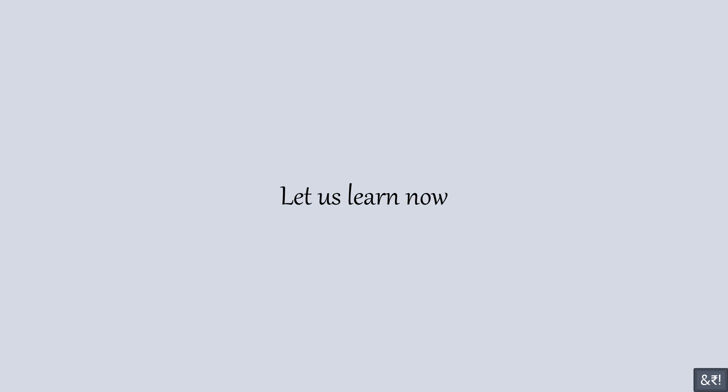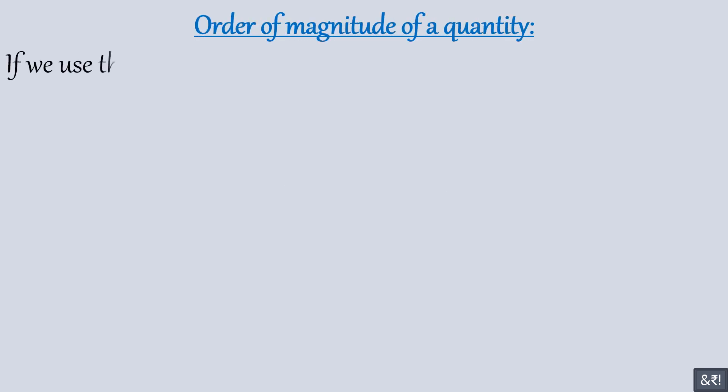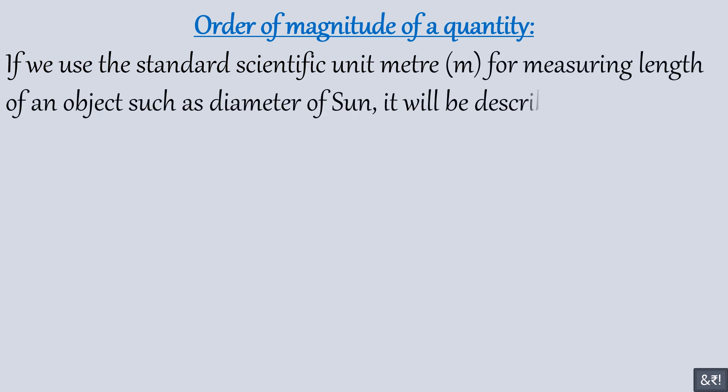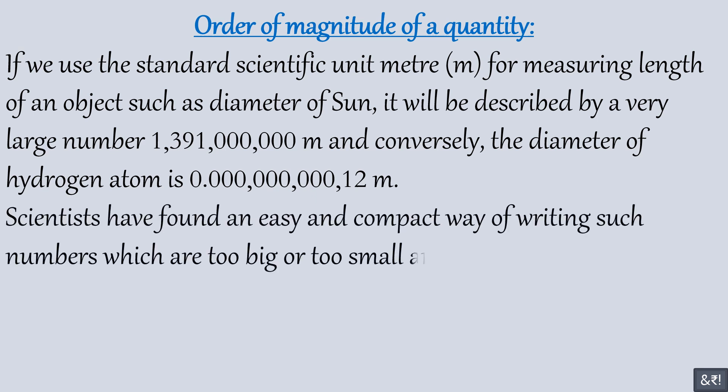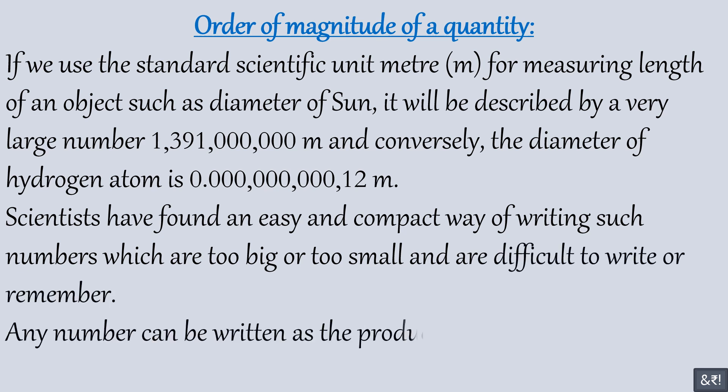Let us learn now order of magnitude of a quantity. If we use the standard scientific unit meter (m) for measuring length of an object such as diameter of sun, it will be described by a very large number 1,391,000,000 meters. And conversely, the diameter of hydrogen atom is 0.0000000000012 meters. Scientists have found an easy and compact way of writing such numbers which are too big or too small and are difficult to write or remember. Any number can be written as the product of a number between 1 and 10, and a number which is power of 10.